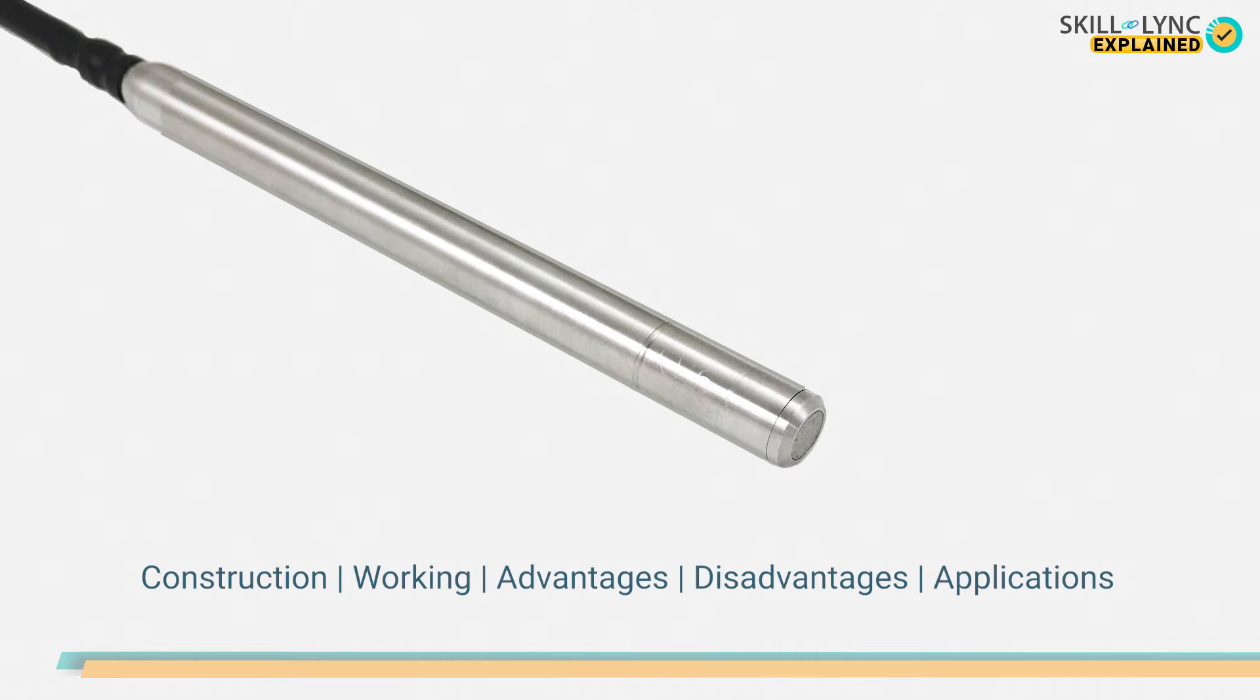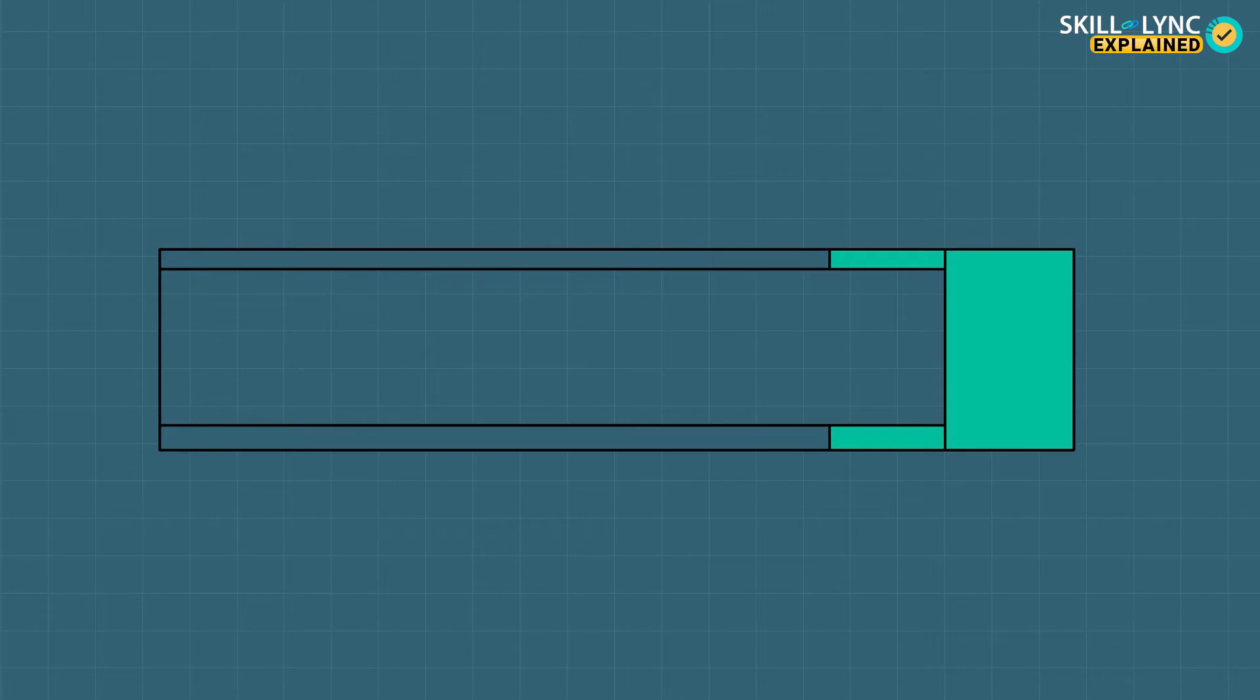The construction of the fiber optic sensor is very simple. The sensor consists of an optic fiber and has two reflecting surfaces. The first reflecting surface is semi-reflective and is coated with a dielectric medium.